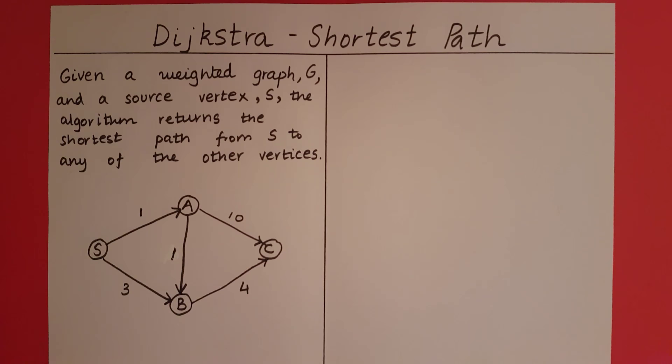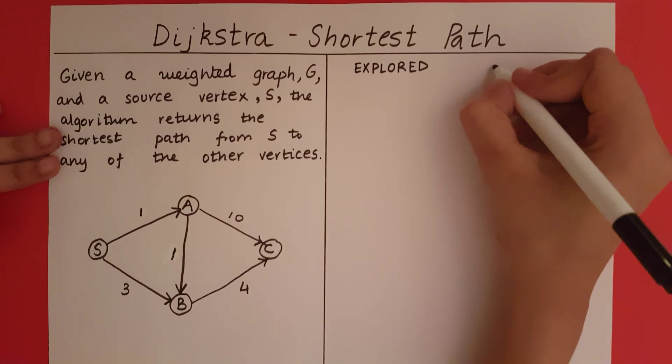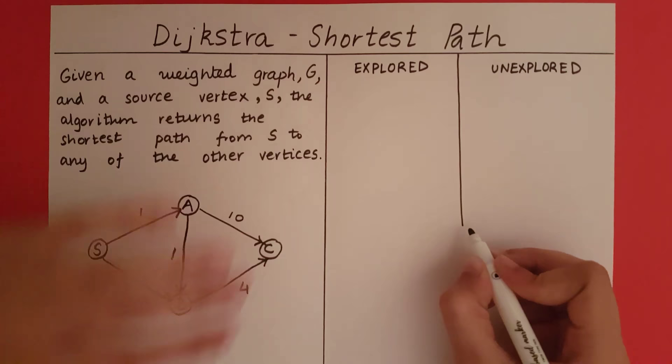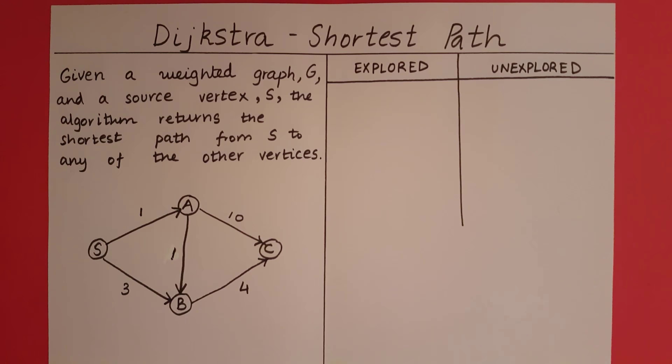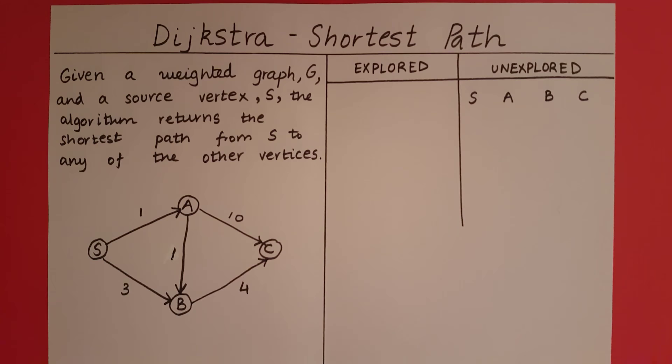The first thing in Dijkstra's algorithm is we are going to consider two sets of vertices. The first set will be called the explored vertices and the second set will be called the unexplored vertices. In the beginning all the vertices are unexplored — so I have S, A, B and C in my unexplored side.